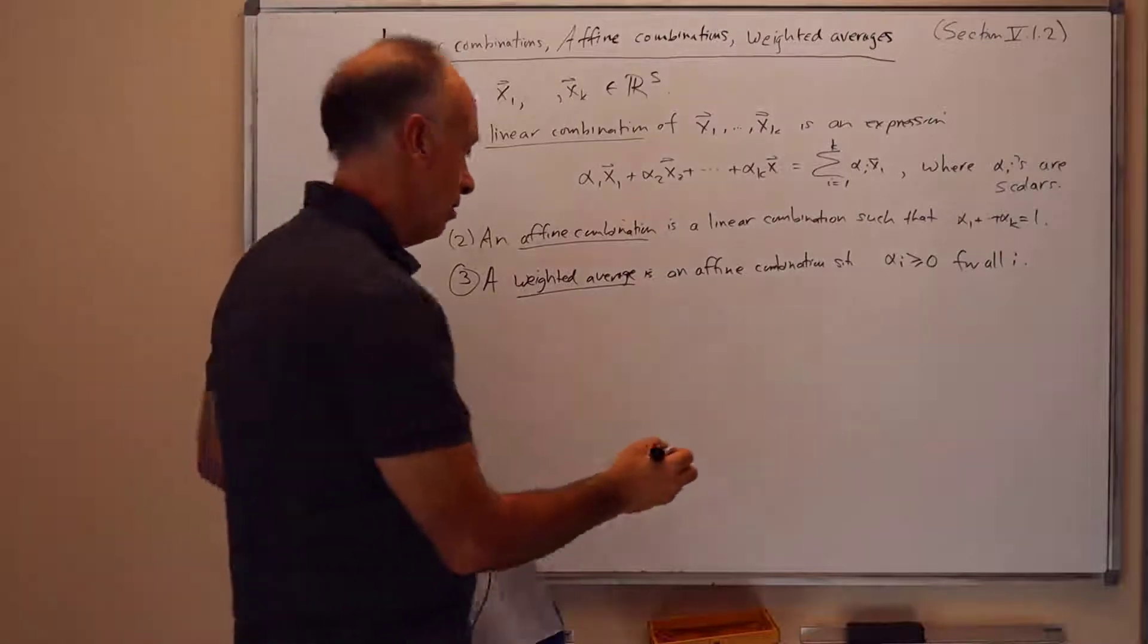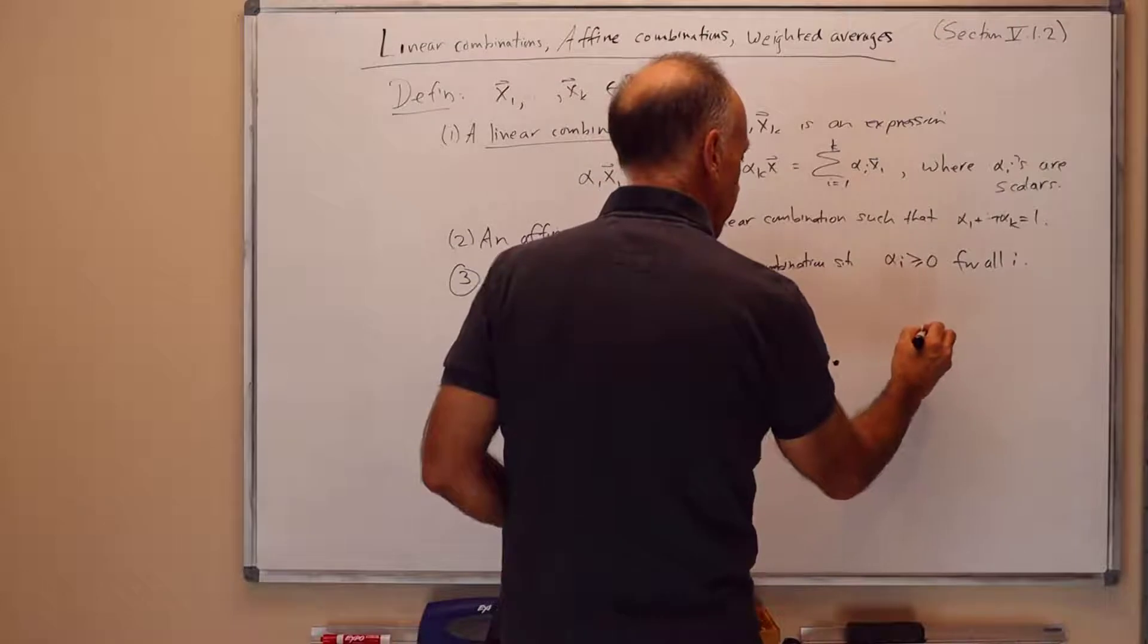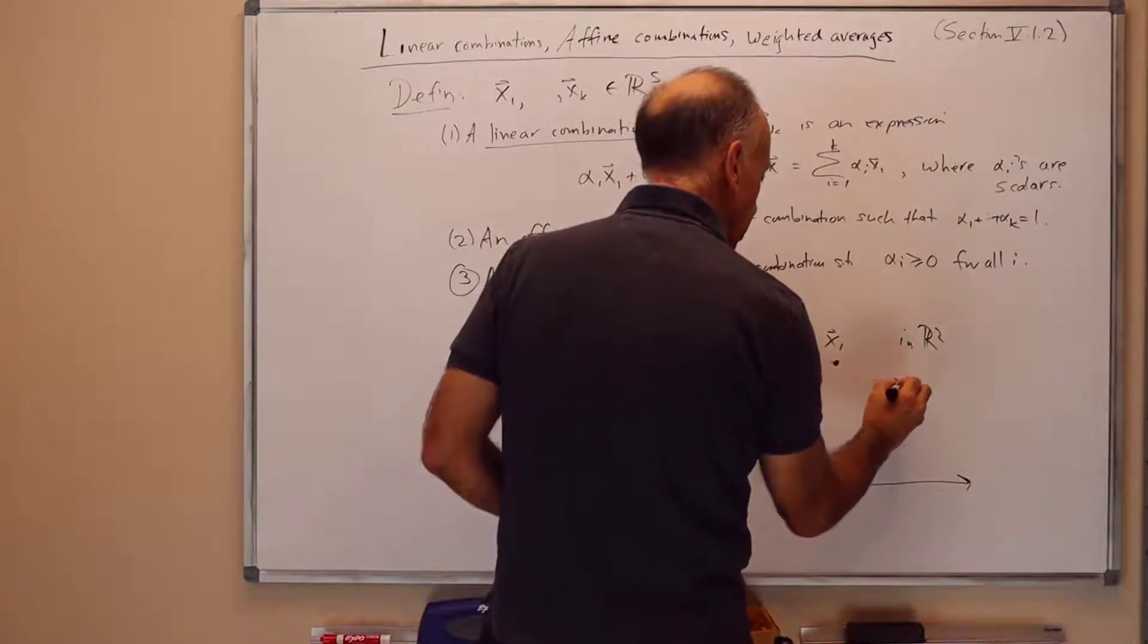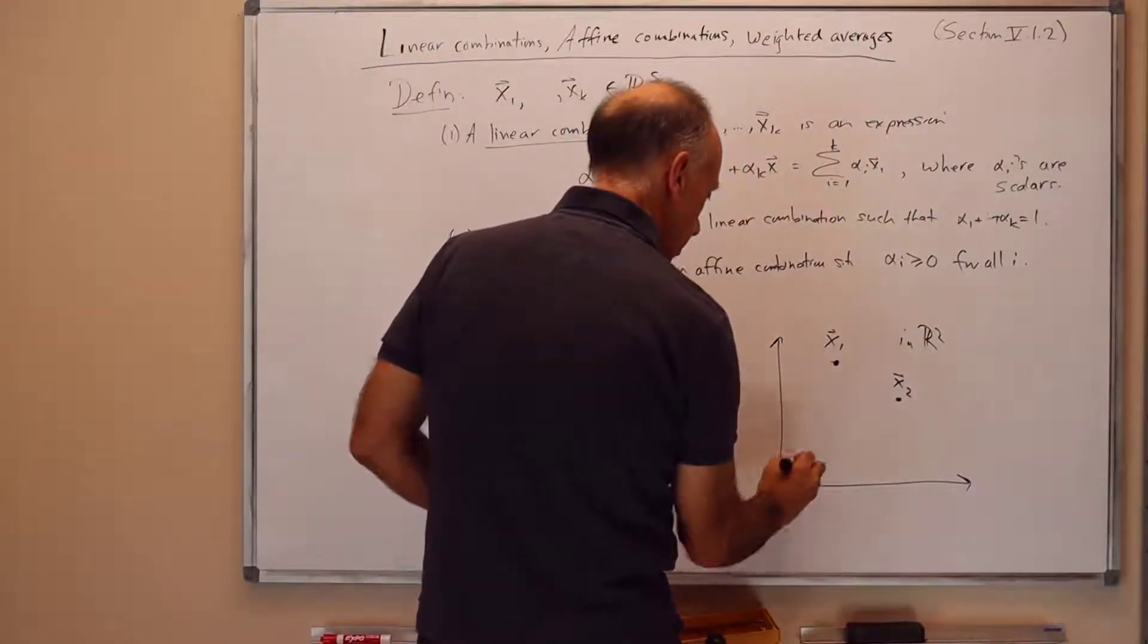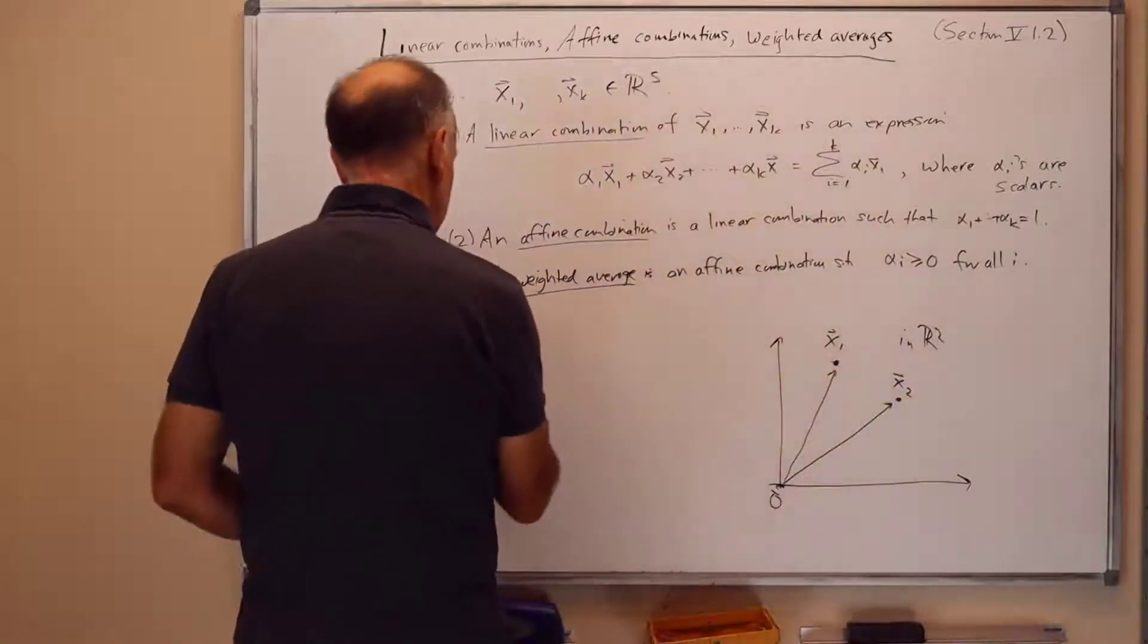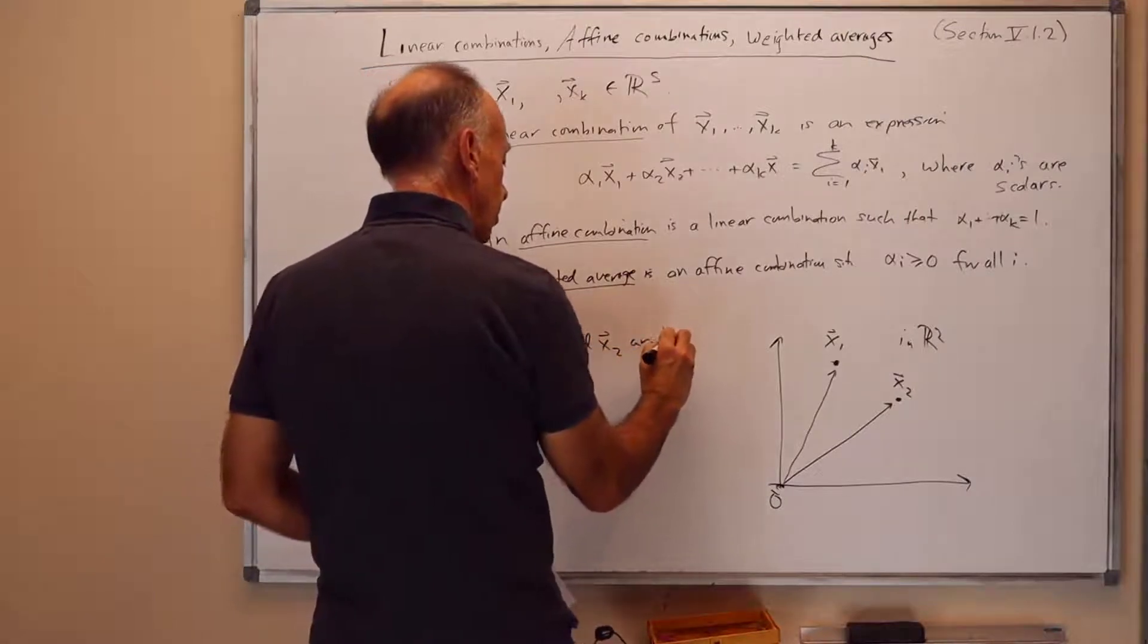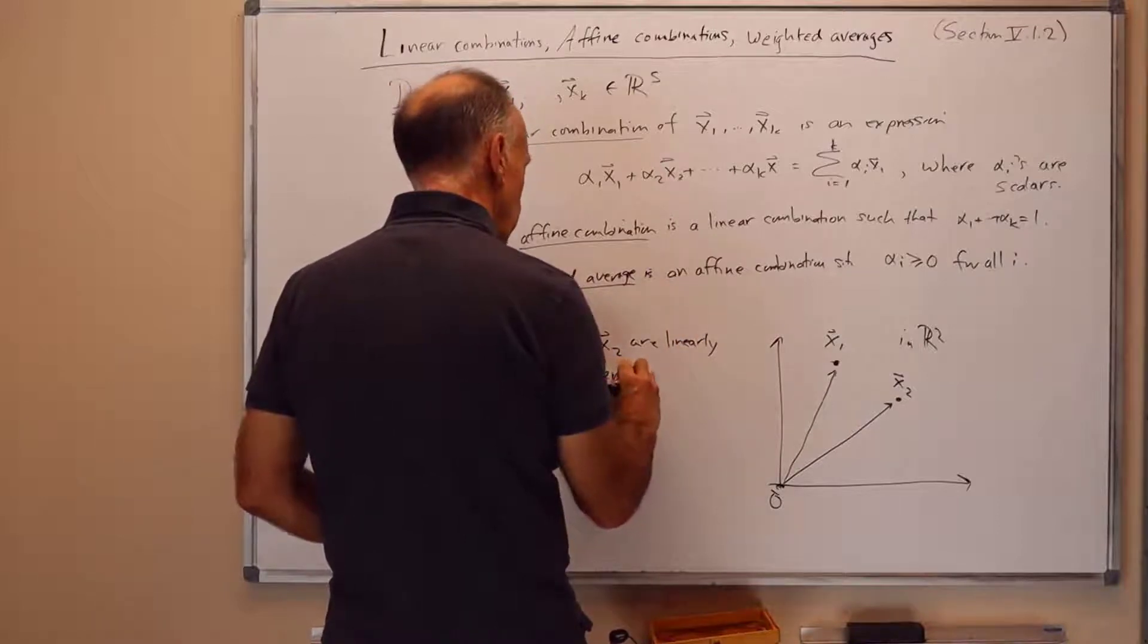So pictorially to understand what's going on here, suppose let's just take a simple case with k equals 2 and let's work in R2. So suppose I've got the two points x1, x2, which we can view either as points or vectors. And let's suppose that x1 and x2 are linearly independent, so you can't write one of them as a scalar multiple of the other.